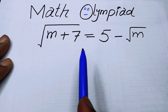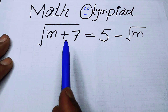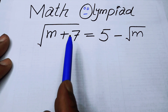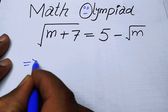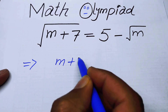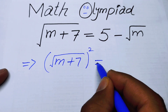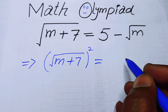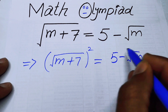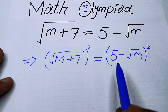The very first thing we are going to do is remove the square root sign on both sides. In order to remove the square root sign, we take the square on both sides, so we have √(m+7) whole squared equals (5 - √m) whole squared.